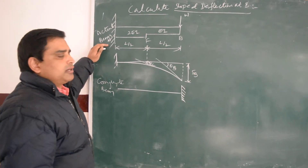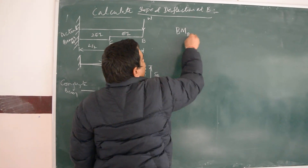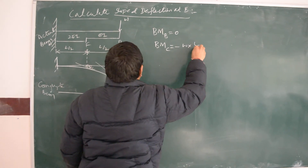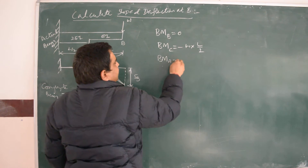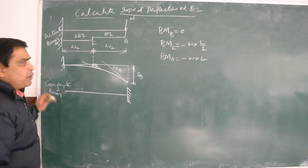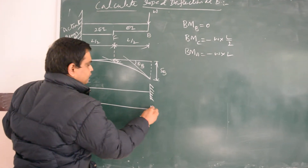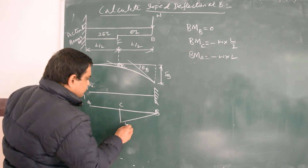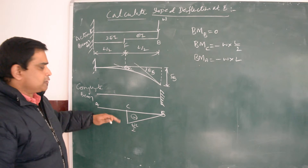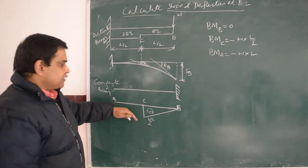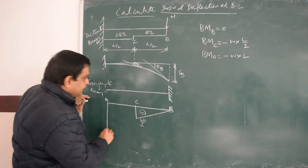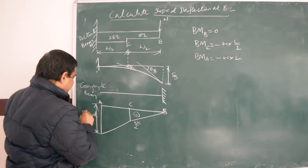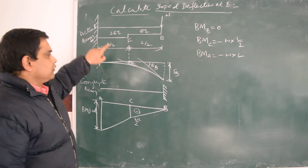Now we calculate the bending moment at A, B, and C for the actual beam. The bending moment at the free support B is zero. The bending moment at the midpoint C is minus W times L/2 (i.e., −WL/2). The bending moment at A is −WL. Since the values are negative, the bending moment diagram is drawn below the axis.